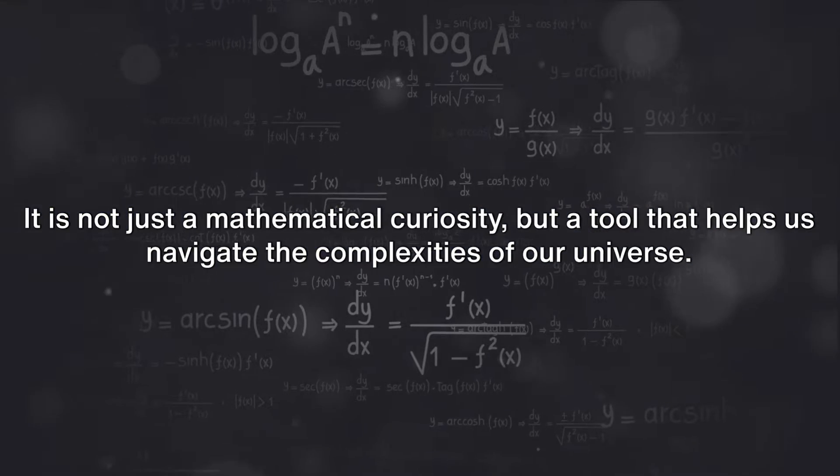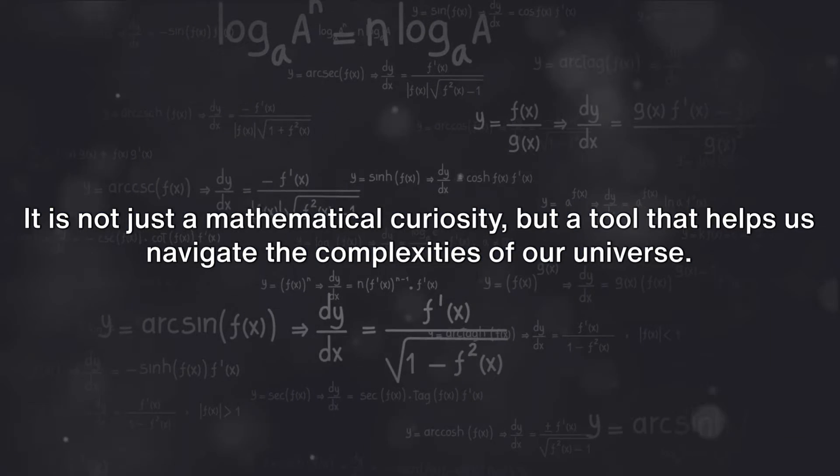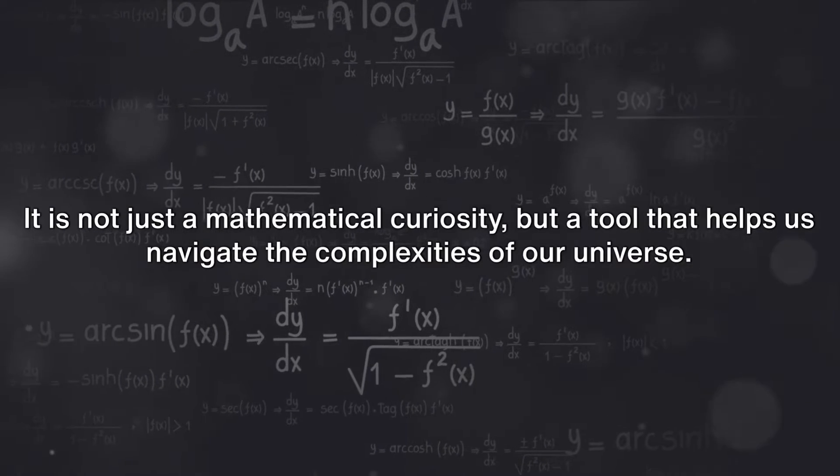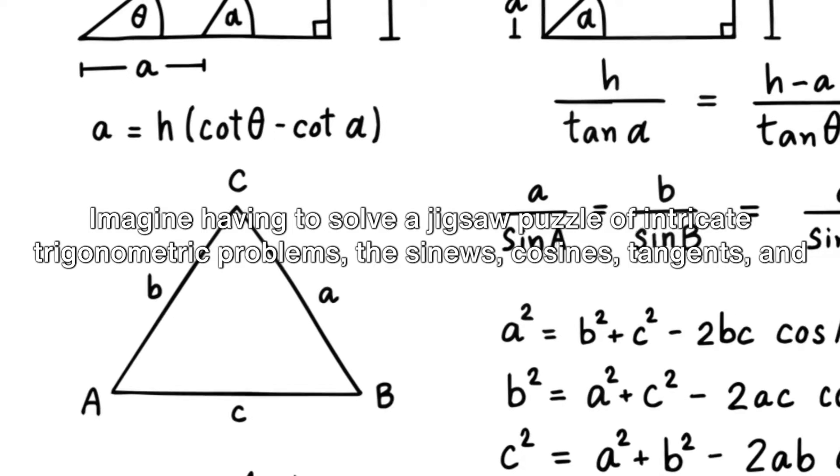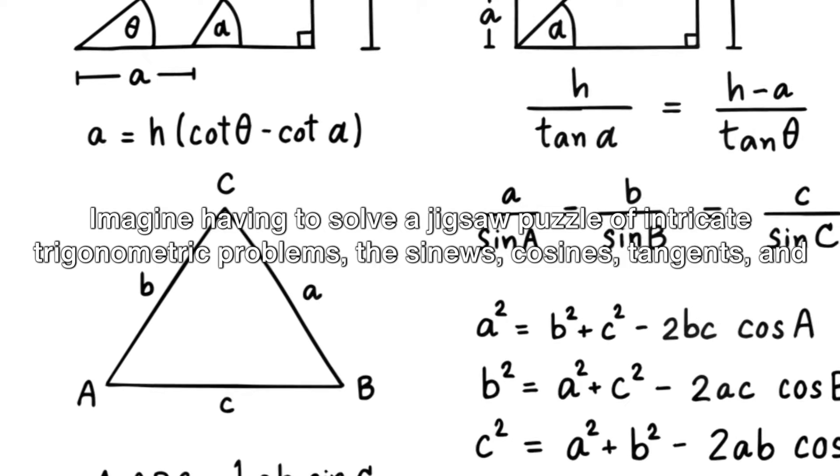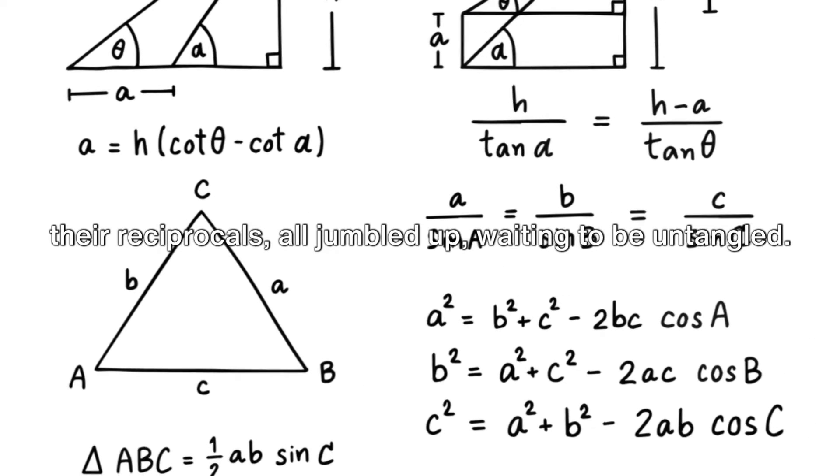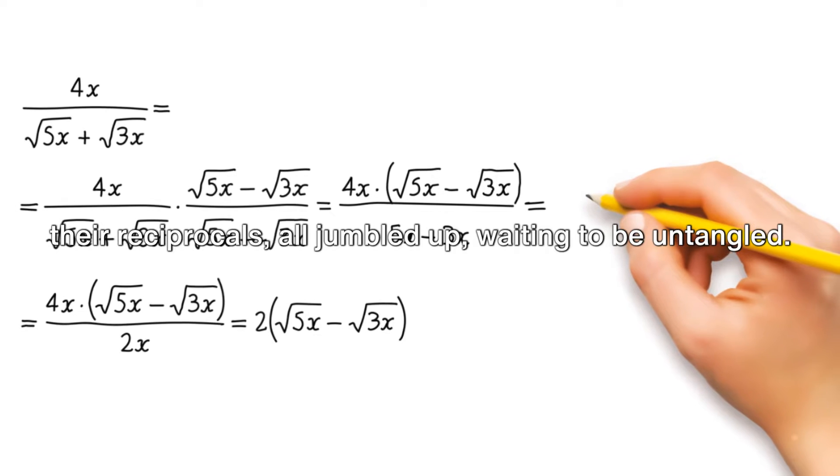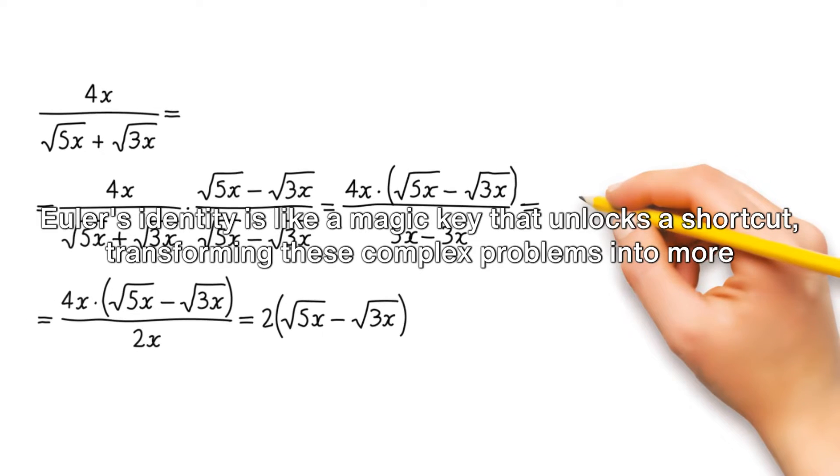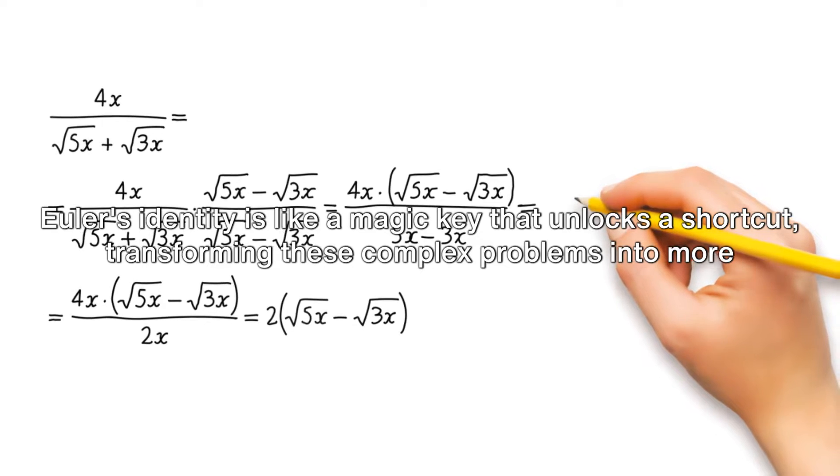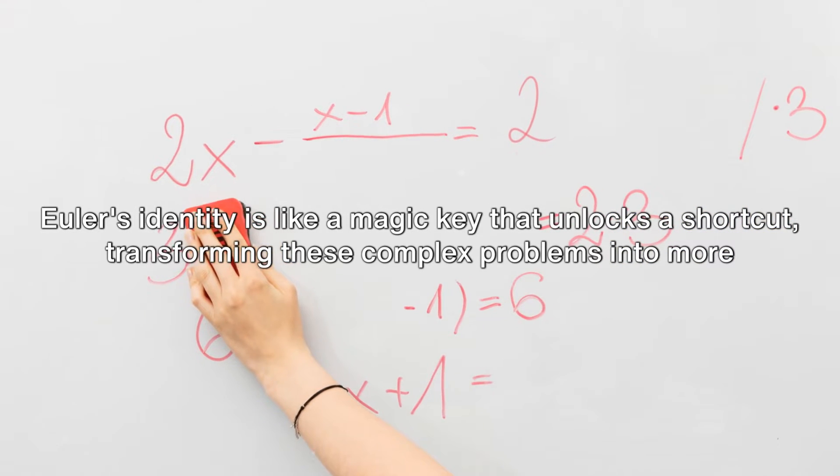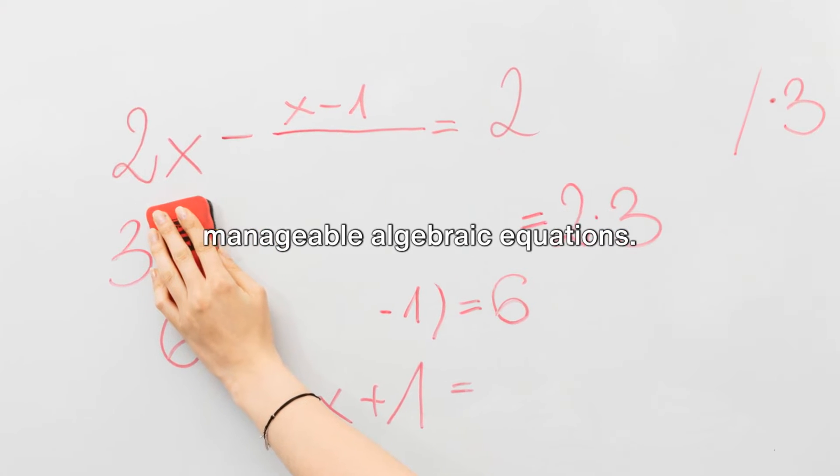It is not just a mathematical curiosity but a tool that helps us navigate the complexities of our universe. Imagine having to solve a jigsaw puzzle of intricate trigonometric problems—the sines, cosines, tangents, and their reciprocals all jumbled up, waiting to be untangled. Euler's identity is like a magic key that unlocks a shortcut, transforming these complex problems into more manageable algebraic equations.